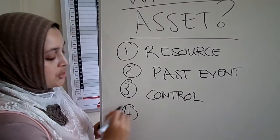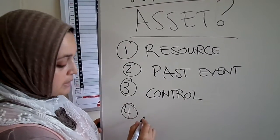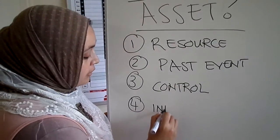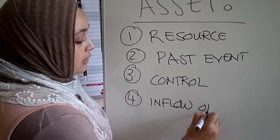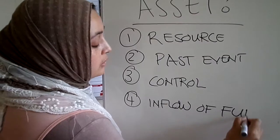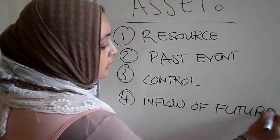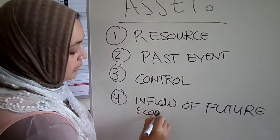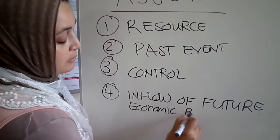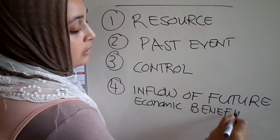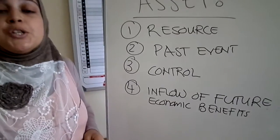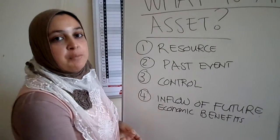And the fourth part of the definition of an asset is, there must be an inflow of future economic benefits. So those are the four parts of the definition.